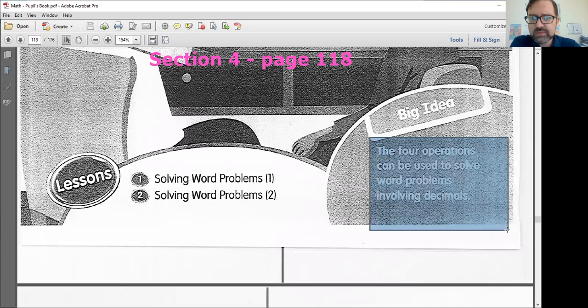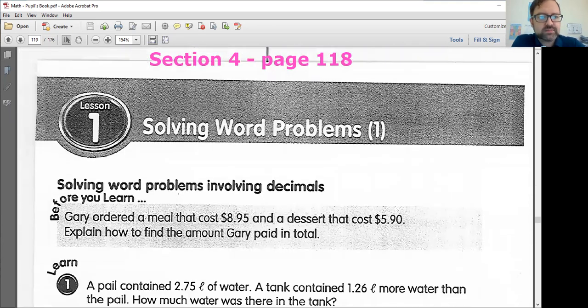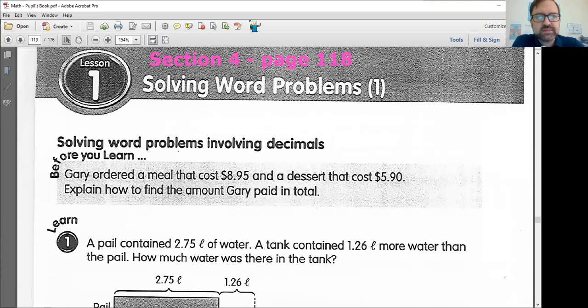Just remember here, the four operations, meaning addition, subtraction, multiplication, and division can be used to solve word problems involving decimals. So these are just like those other word problems we did, except now we got some little decimal points in there. So let's check out a couple examples.